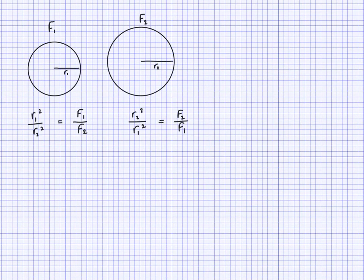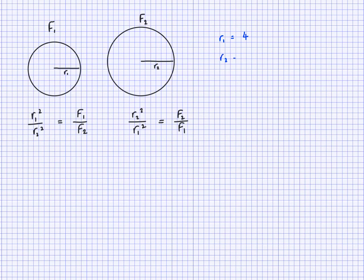Let's find F1 when we know R1, R2, and F2. Say R1 = 4, R2 = 5, and F2 = 25. Since F1 appears at the top in R1²/R2² = F1/F2, use that equation. Substituting: 4²/5² = F1/25, which gives 16/25 = F1/25.